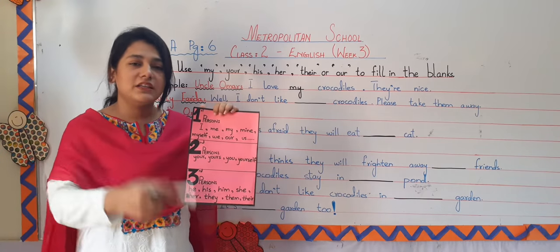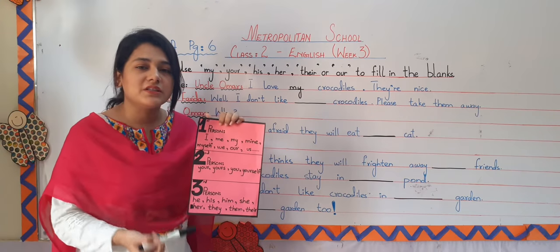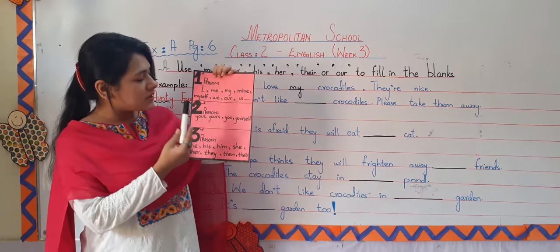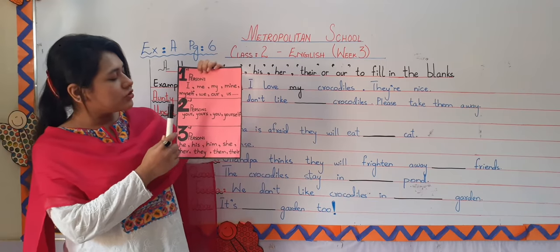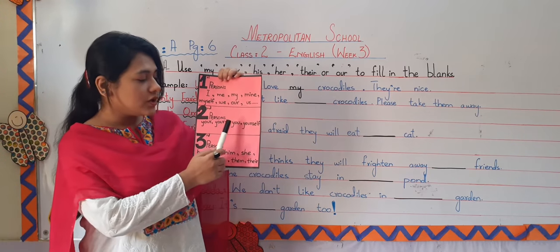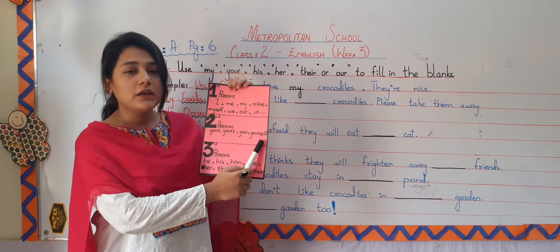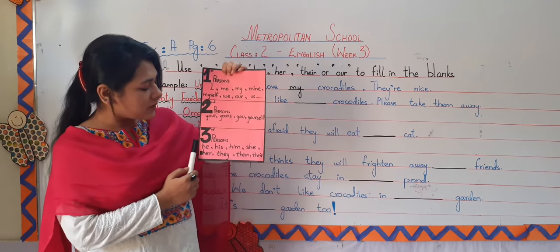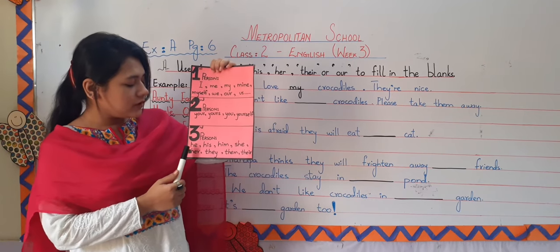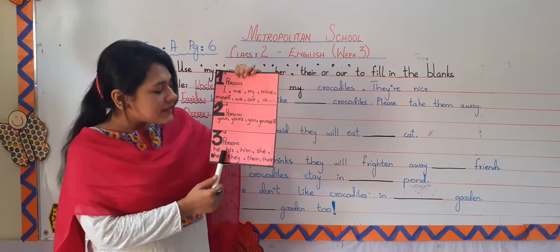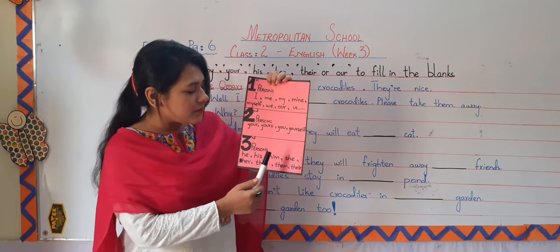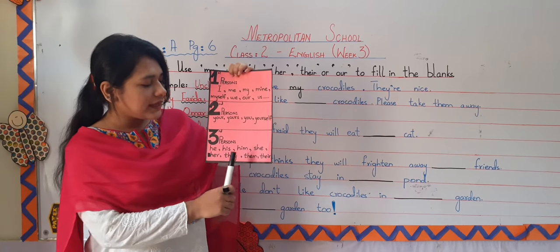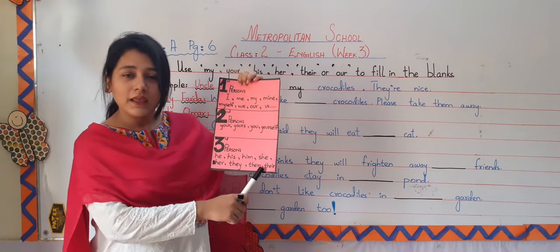In second person, we use your, yours, you and yourself. And in the last, third person, we use he, his, him, she, her, they, them and their.